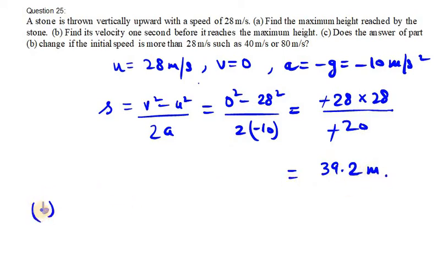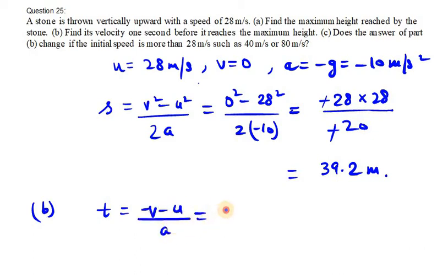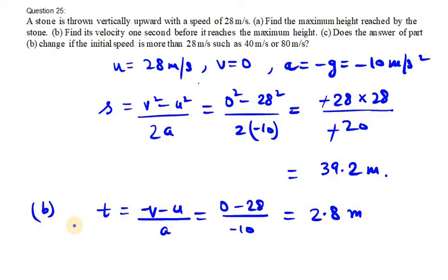Now the second part says: find its velocity one second before it reaches the maximum height. So we need to find the total time first. Time equals V minus U over A. V is 0, so it is 0 minus 28 over minus 10. The two negatives cancel, giving us a time of approximately 2.8 seconds.